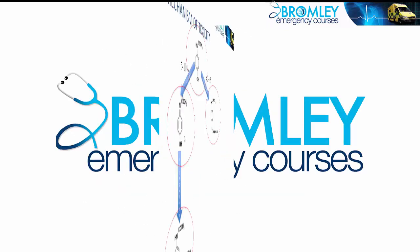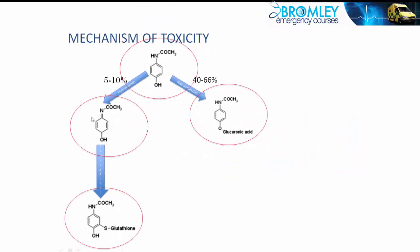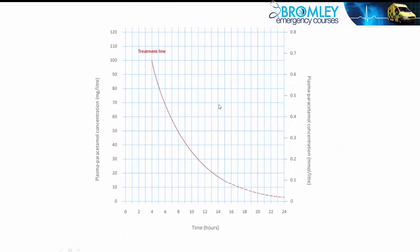The toxic intermediate metabolite is present in very small quantities because it is toxic to liver cells, and so it is rapidly converted to the compound shown at the bottom. If we get a level to the right of this line — on the y-axis we have the plasma paracetamol concentration — if the amount of paracetamol is above the red line, then we treat.